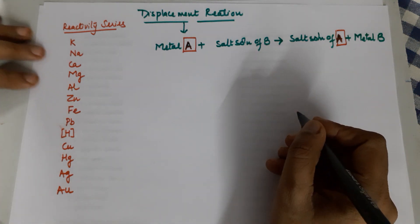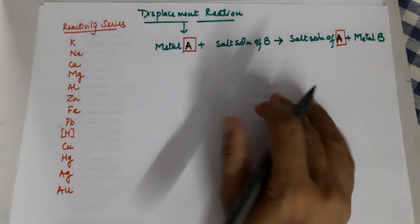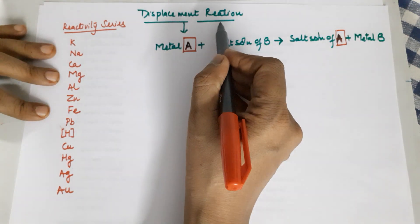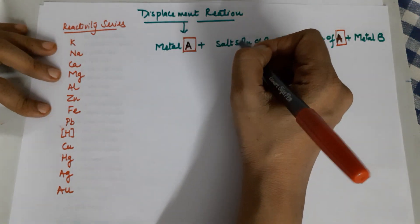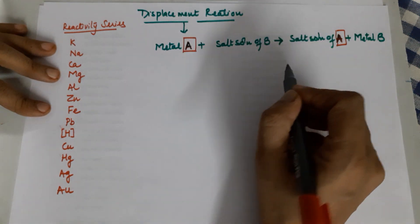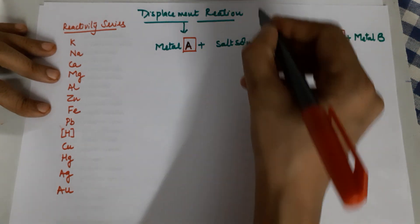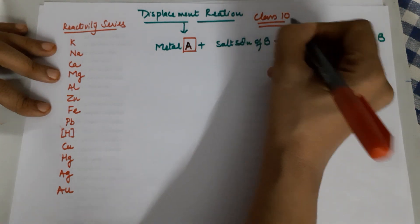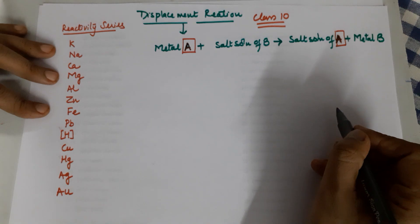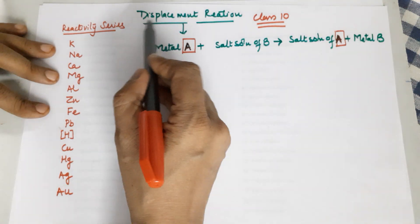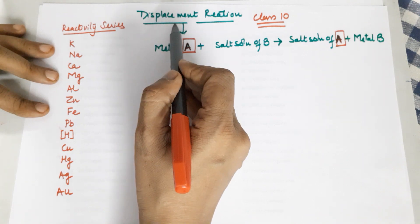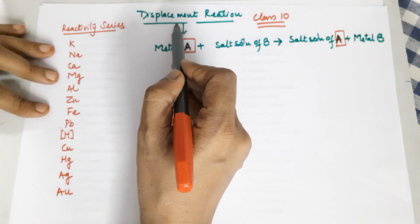Good evening, class 10. In today's class we are doing a topic known as displacement reaction. This particular topic is a part of chapter 1 as well as chapter 3 in the class 10 chemistry syllabus. To understand the displacement reaction, as the word says, places have to be changed — one place of a metal is changed by the help of another.